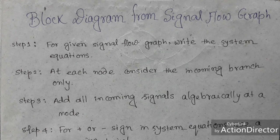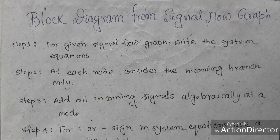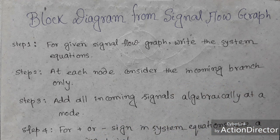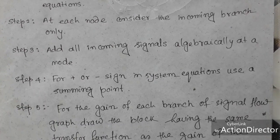In this video I will show you how to convert a signal flow graph to a block diagram. We follow a few steps. In step 1, for a given signal flow graph, write the system equations. In step 2, at each node consider the incoming branches only. In step 3, add all incoming signals algebraically at the node.